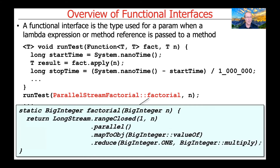Let's take a quick look at the implementation of the parallel stream factorial method. It takes a BigInteger as a parameter and returns a BigInteger. It generates a range of values from one to n, then in parallel, using Java parallel streams, converts each long value to a BigInteger using the mapToObj intermediate operation with a method reference for BigInteger.valueOf. Then it uses the reduce terminal operation from the Java streams framework to pairwise multiply those values together, starting with an initial seed value of one, ultimately computing the factorial in parallel.